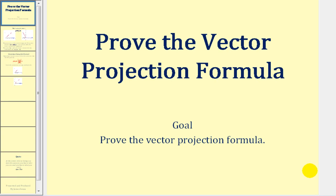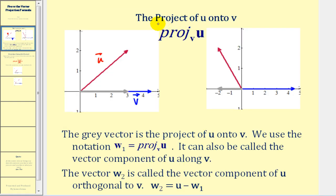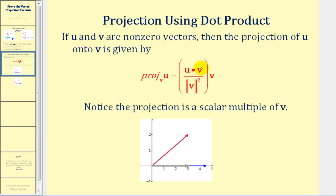Welcome to a video that will prove the vector projection formula. Let's start by reviewing vector projection. If we want to project the red vector u onto the blue vector v, we use this notation here, and the result would be this gray vector here. The formula to determine this vector projection would be u dotted with v divided by the magnitude of v squared, times vector v.